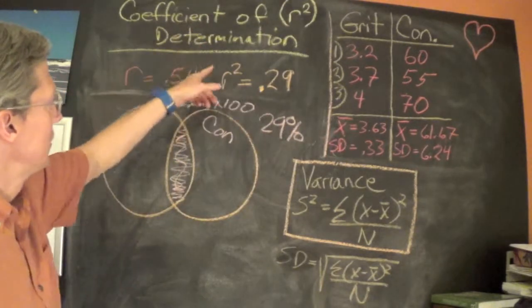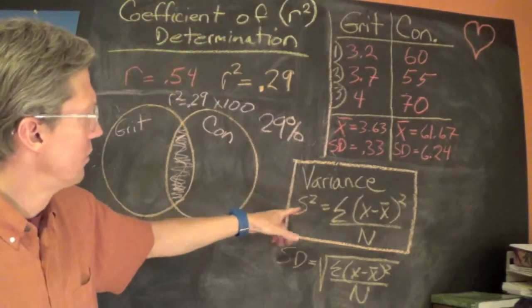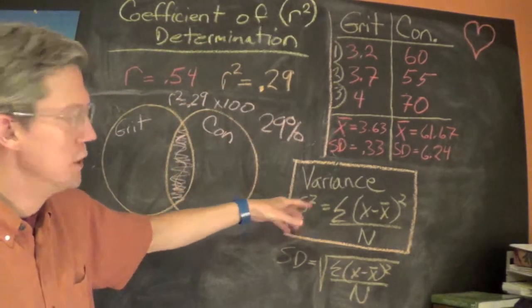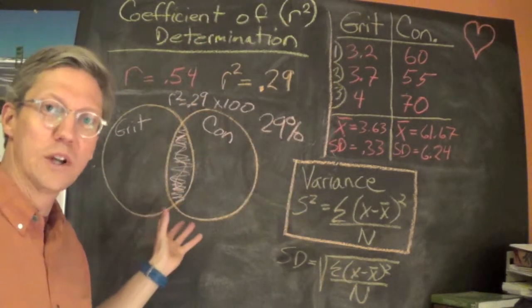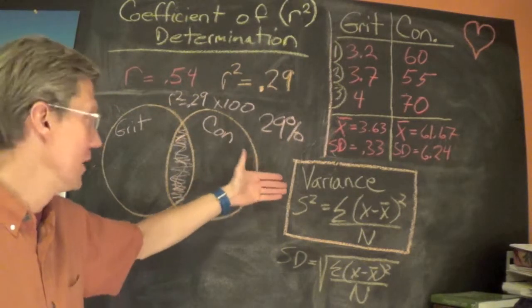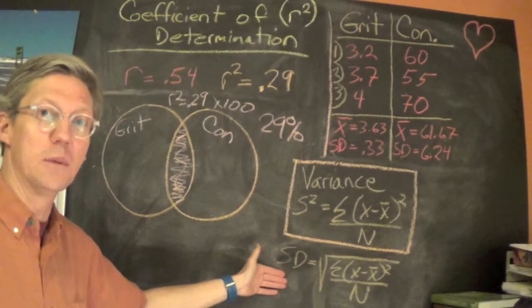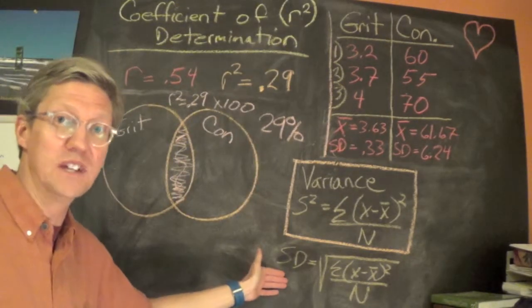So that's the purpose of the coefficient of determination. All we're really doing is moving back to where we can talk about the proportion of variability, since we had been talking in units of deviation.